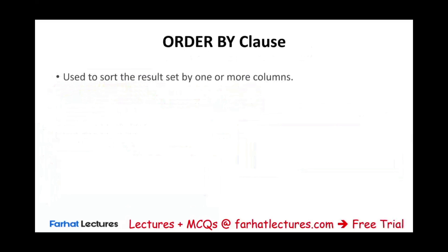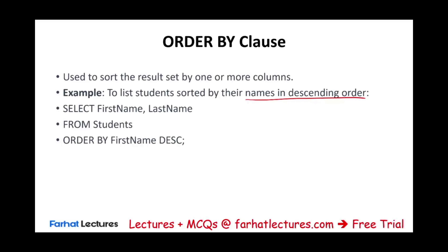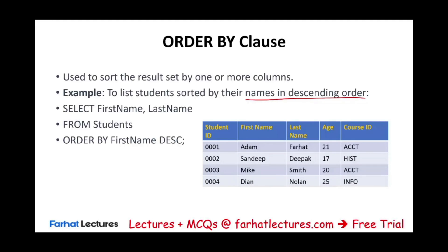The ORDER BY clause is used to sort the result set by one or more columns. For example, to list students sorted by their names in descending order, we write: SELECT last_name FROM student ORDER BY first_name DESC. This rearranges the data in the specified order.